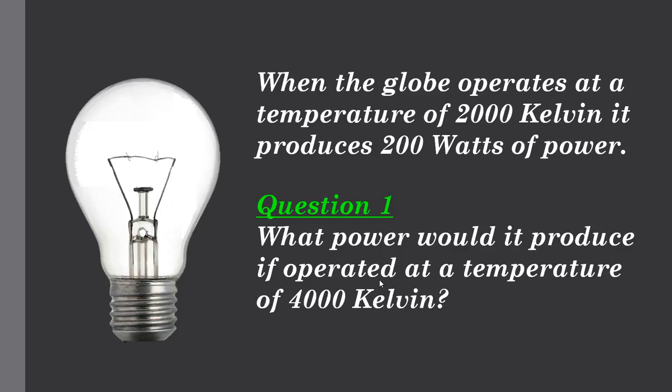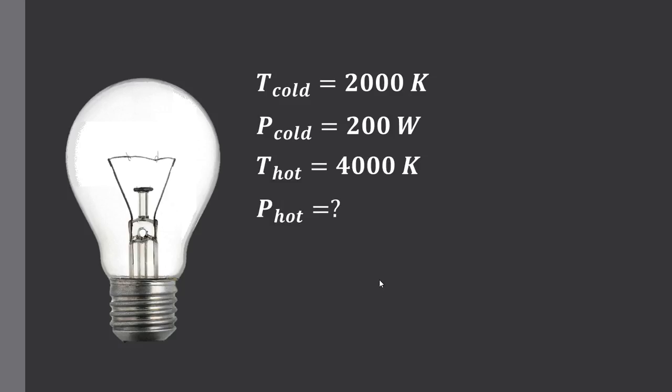So we're comparing 2000 Kelvin to 4000 Kelvin. All temperatures must be stated in Kelvin. So the cold temperature in those two comparisons of 2000 and 4000, the colder temperature is in fact the 2000 Kelvin. Its colder power is 200 watts. Its hot temperature is 4000 Kelvin. And we're trying to calculate the power rate of the hot globe at 4000 Kelvin. Here's the equation we use. Now it looks at the ratio of the hot to cold power and compares it to the ratio of the hot to cold temperature raised to the power of 4. It looks complex but as we go through these four examples we see how it can be applied quite simply.